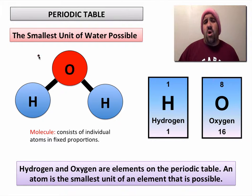If we had water, the smallest amount of water that you could possibly have would be one molecule of water. A molecule consists of individual atoms in fixed proportions. So this would be one unit of water, one molecule of water, H2O. Water is made up of individual atoms. There are two hydrogen and one oxygen atoms in water, and we find hydrogen and oxygen on the periodic table. They are elements, and the smallest unit of an element that is possible is one atom.